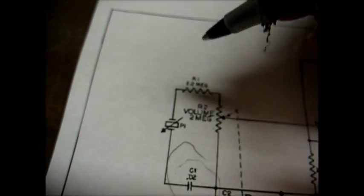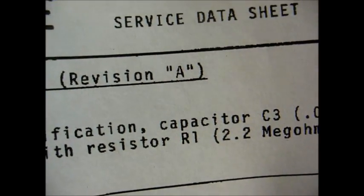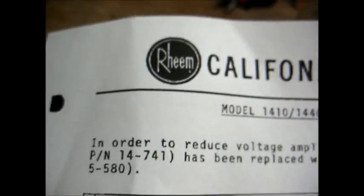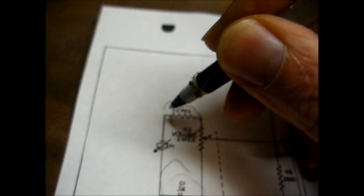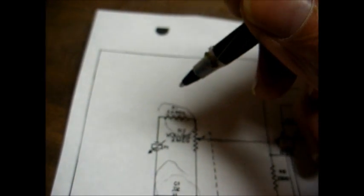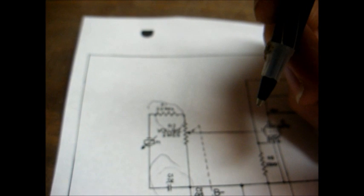And also, originally, I had jumped out this resistor with a piece of wire. Then, after I printed this schematic, I read this note on here that says, in order to reduce voltage amplification, capacitor C3 0.02 microfarad has been replaced with resistor R1, 2.2 megaohm. That's this resistor right here. So, I just simply replaced this resistor with a 0.02 microfarad capacitor. And it seems like that helped a little bit. Our tonal quality improved a little. And it has adequate volume now with the P226 cartridge.